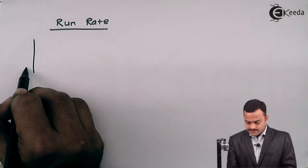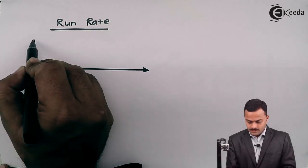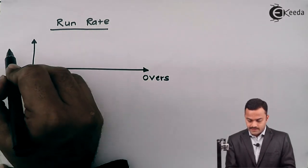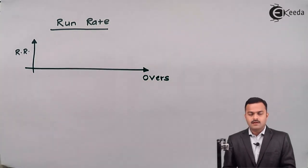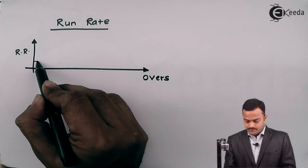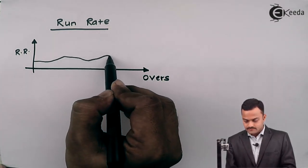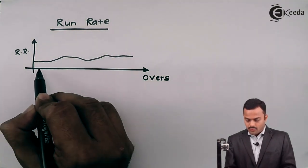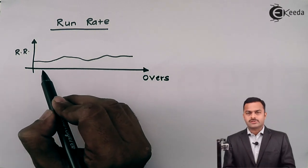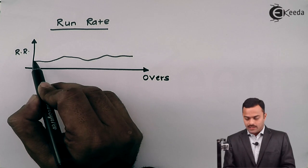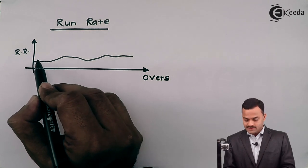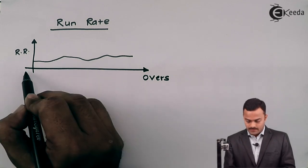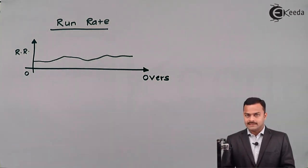So it is something like this - number of overs and then run rate, and we have a normal graph like this. So what it is saying, there are number of overs bowled and in between the overs also, I can decide or I can check what is the run rate of that particular team who is batting. So that can also be considered as a signal.